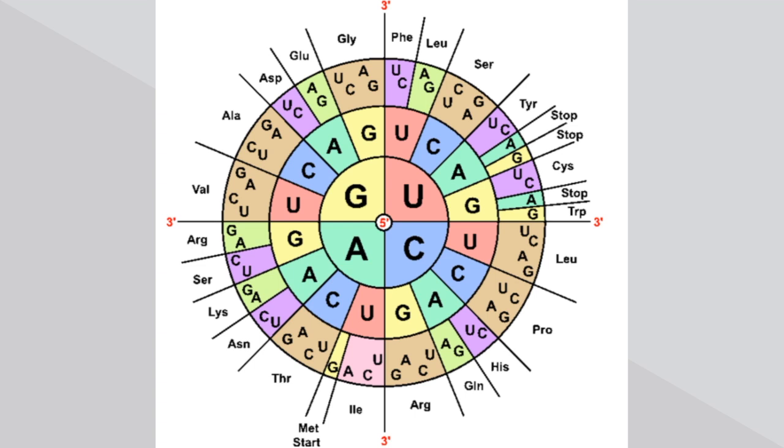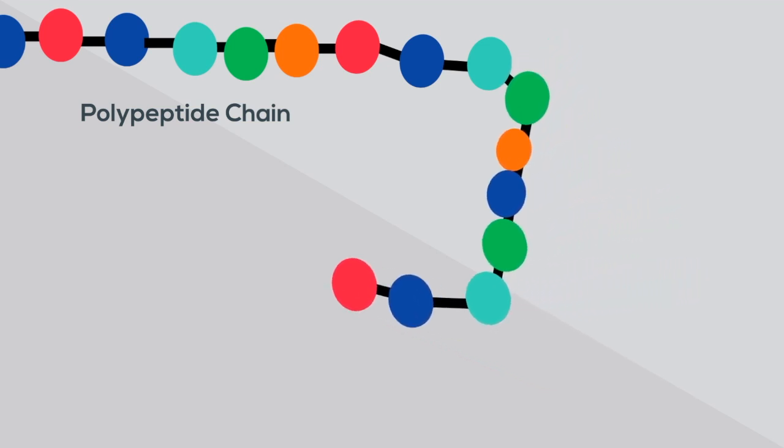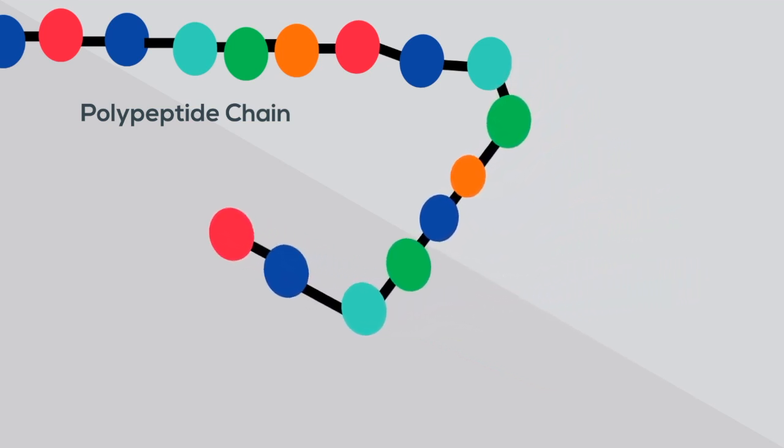You can use an amino acid chart to see which codon matches with each amino acid. After the stop code is reached, the string of amino acids may begin to fold into a functional protein.